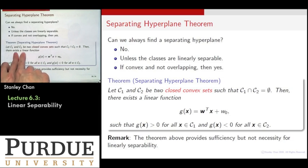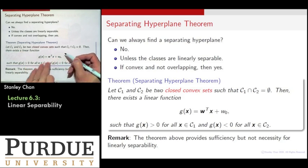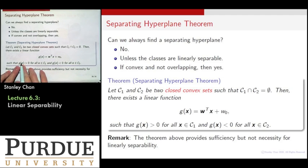Then you can always find a linear function, g(x) equals w transpose x plus w0, such that when you put a point x from C1, it will be positive. When you put another point x from C2, it will be negative.